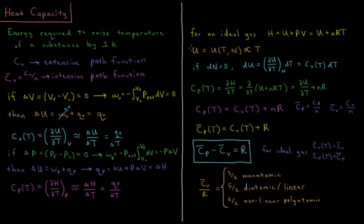For an ideal gas, the internal energy is a function of temperature and the number of particles, so internal energy is directly proportional to temperature. In a closed system, the number of particles doesn't change, so dN equals zero.